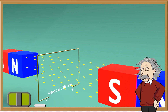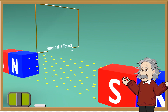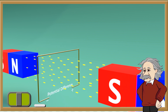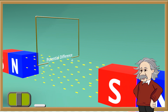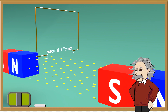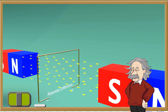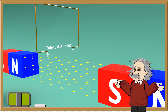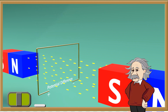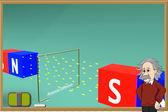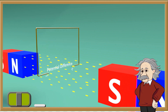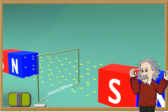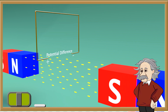Here we can see a wire near a magnetic field. If we move the wire through the magnetic field, then a potential difference is induced across the ends of the wire, but when the wire stops moving, then the potential difference is lost. If we move the wire back up through the magnetic field, then we get the potential difference again. We can notice that the potential difference is now in the reverse direction.